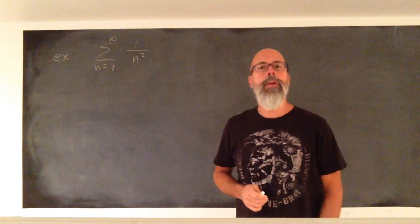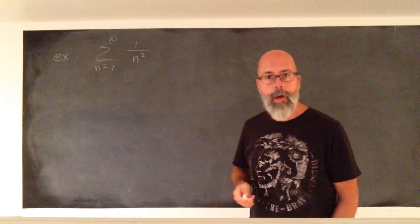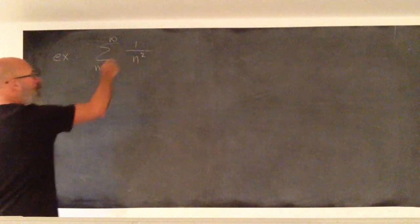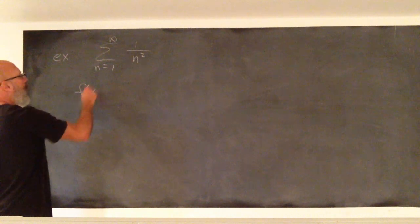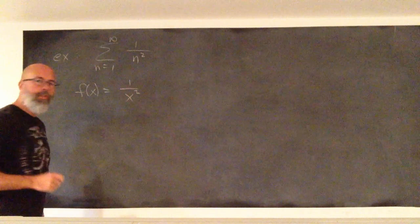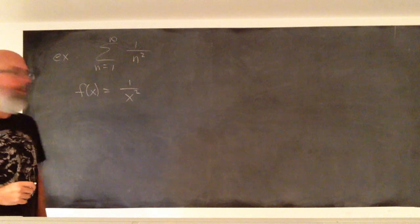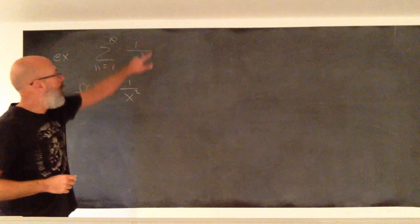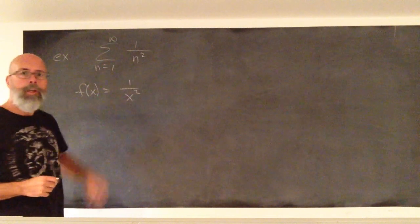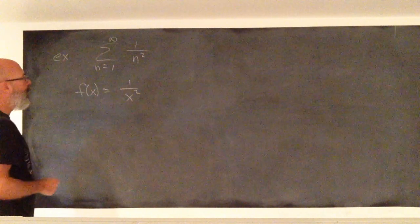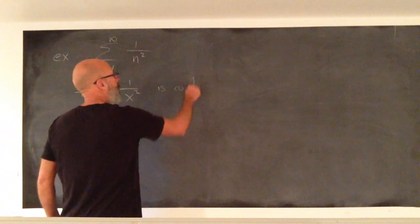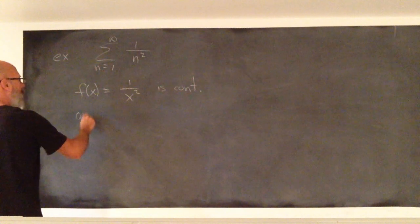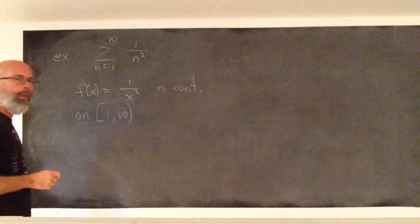First of all, we should check that the integral test actually does apply. The function associated with the sequence 1 over n squared is the function 1 over x squared. When you plug in n for x, you get exactly this. Now, what do we know about this function? This function is continuous on the interval 1 to infinity.